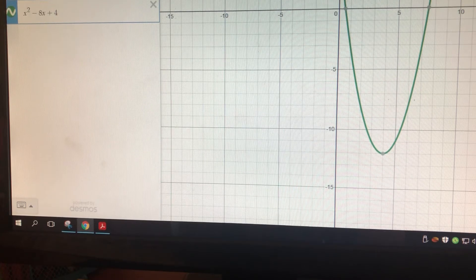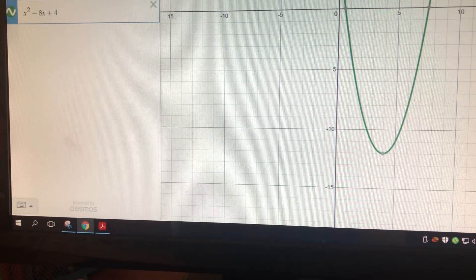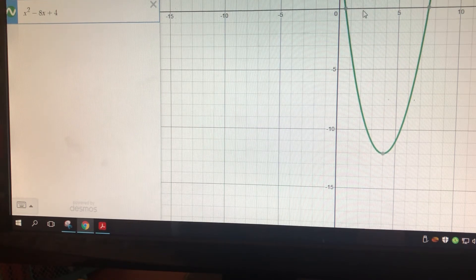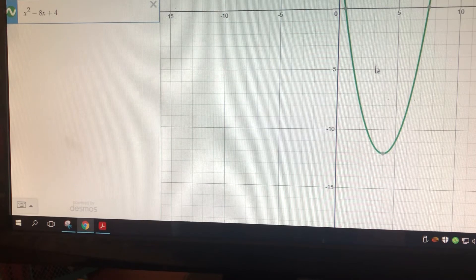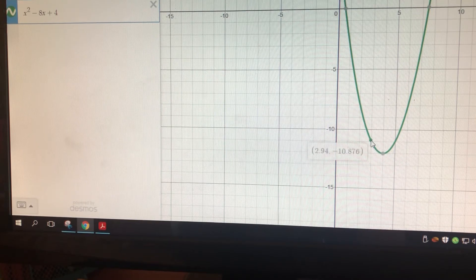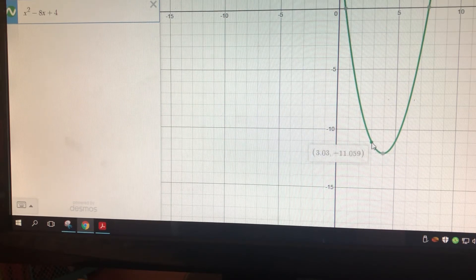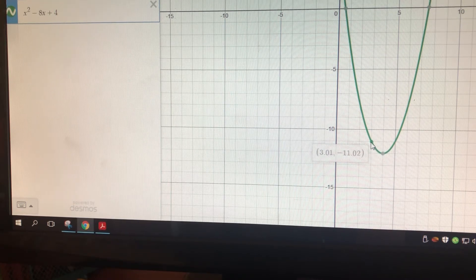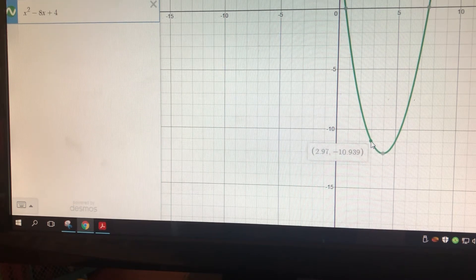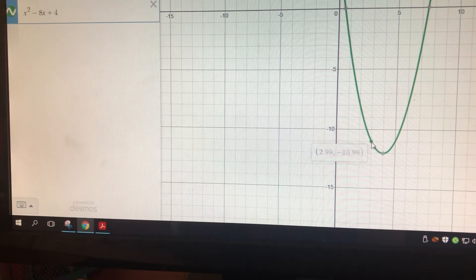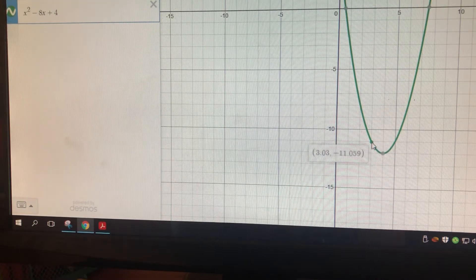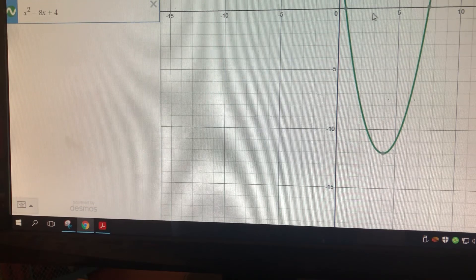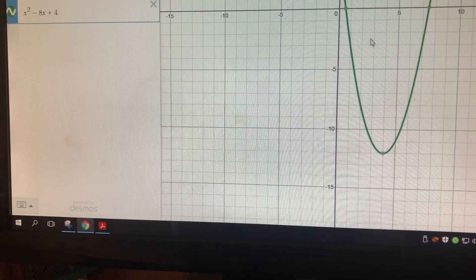And then it says from 1 to 3. So x2 is 3. So 1, 2, 3. Then follow it down until I hit the graph. So when x is 3, y is negative 11. So that's my second ordered pair.